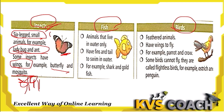Animals that live in water are called fishes. They have fins and a tail to swim in water. Examples are shark and goldfish — they live in water and use their fins and tail to swim.